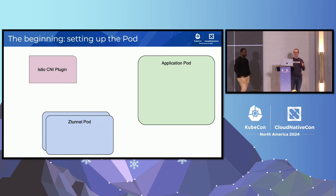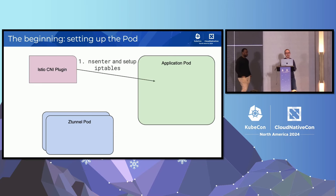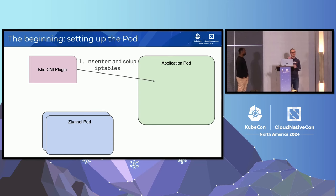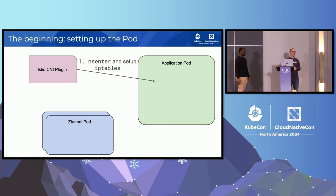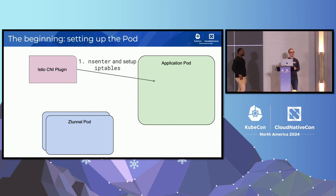On a node, we have the Istio CNI plugin, the application pod, and the Z-Tunnel. The Container Runtime invokes our plugin when a pod is created, giving us the pod name and related info. We enter the pod's network namespace and set up iptables rules. After setting those up, we notify the local Z-Tunnel that there's a new pod, which allows it to also enter the namespace and set up sockets.